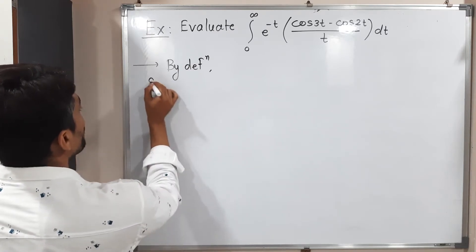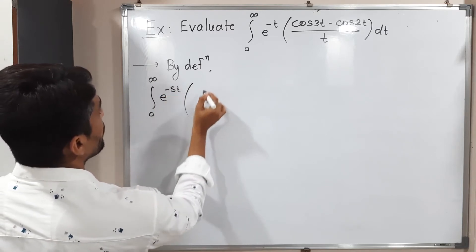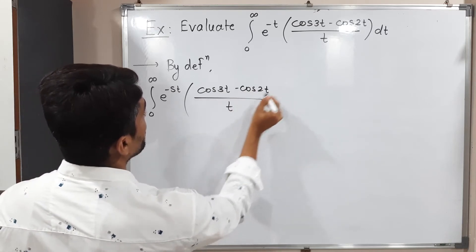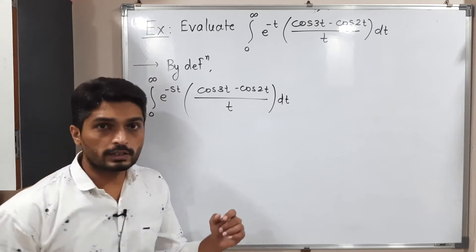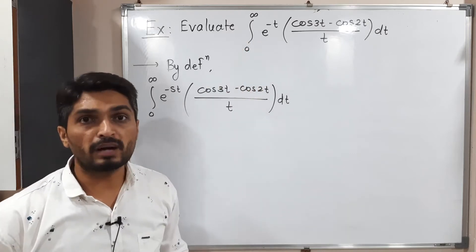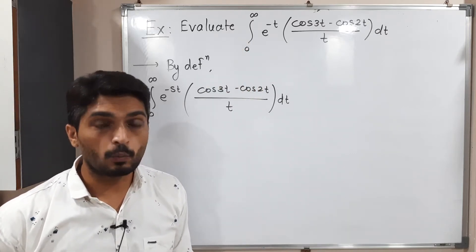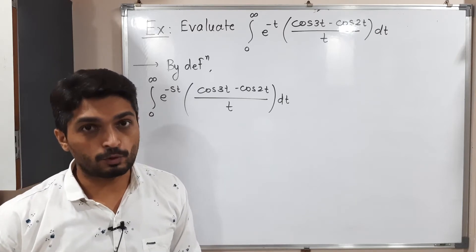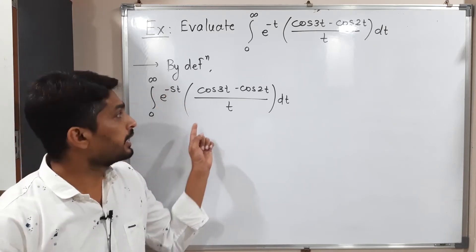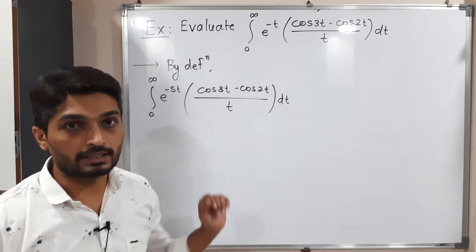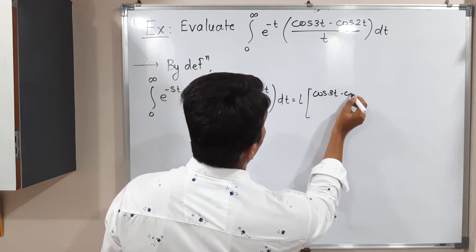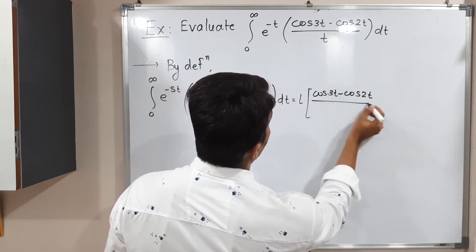We consider the integral from 0 to infinity of e raised to minus st, times (cos 3t minus cos 2t) divided by t, dt. In the given integral we have e raised to minus t, but I have assumed e raised to minus st in order to match the definition of Laplace transform. So this is the same as the Laplace transform definition — integration from 0 to infinity of e raised to minus st times f(t) dt.